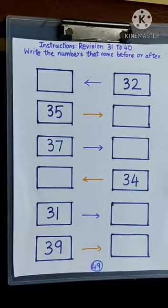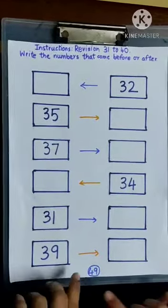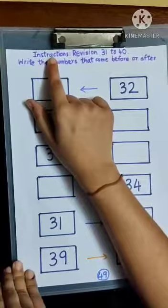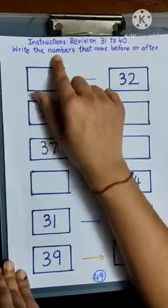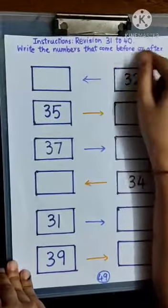We are going to solve page number 49 from Maths World Book. Instructions, revision 31 to 40. Write the numbers that come before or after.